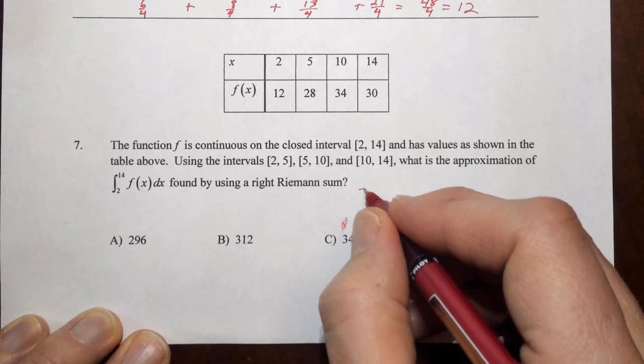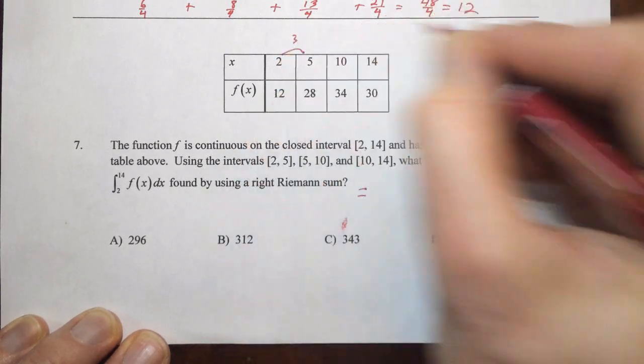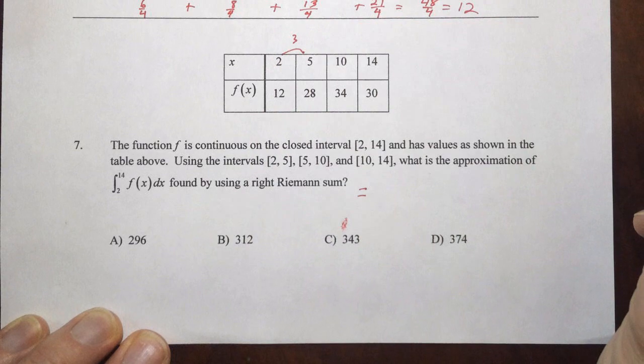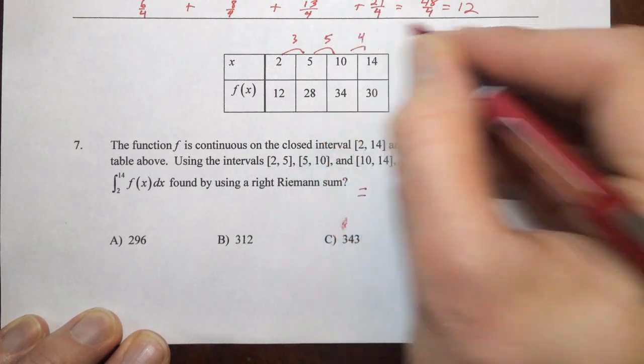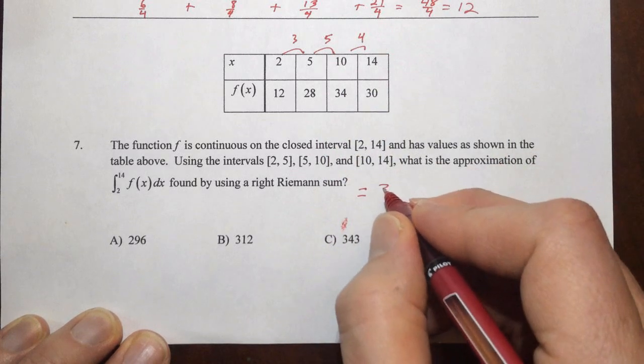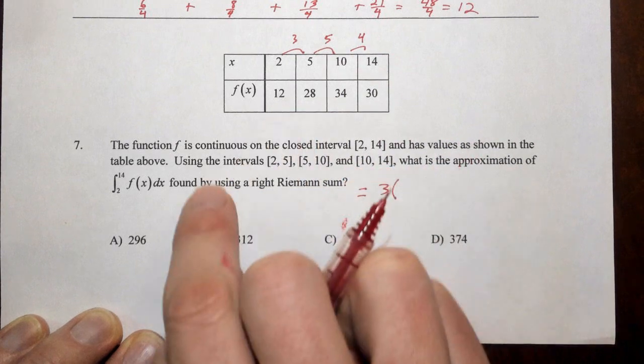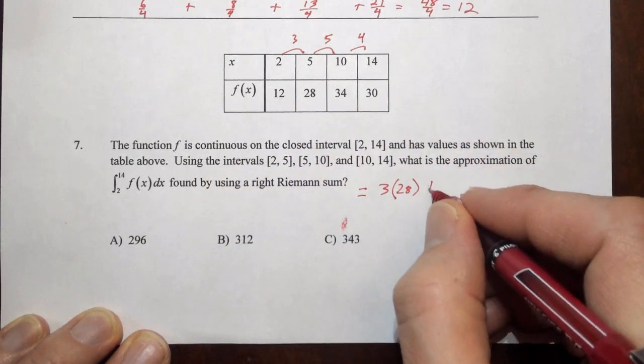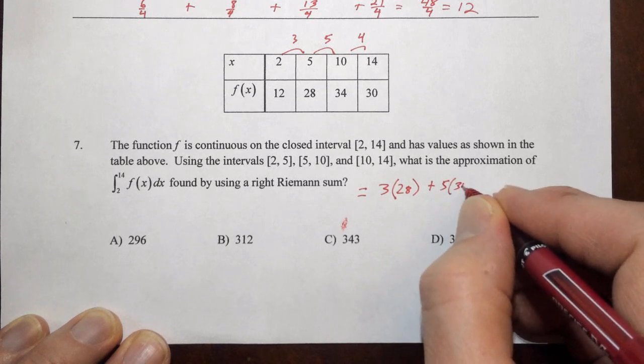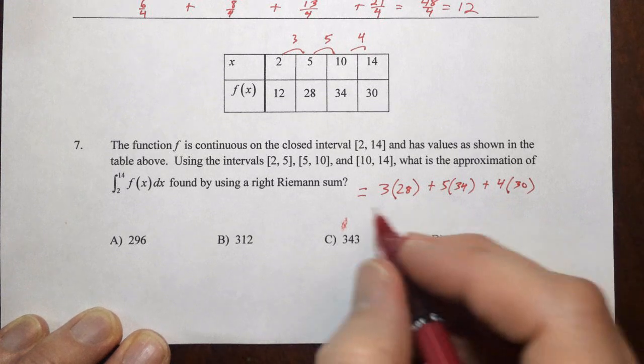So just doing our arithmetic again here, you can see we have the first base is three, the second base is five, and the third base is four. So we're going to have three times, we're looking at the twelve and the twenty-eight, we want the number on the right, so three times twenty-eight, plus five times thirty-four, plus four times thirty.